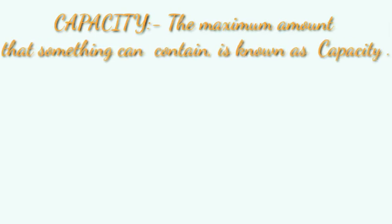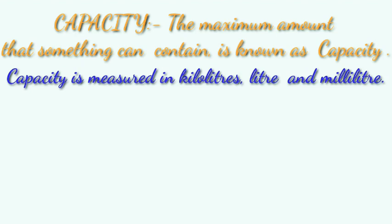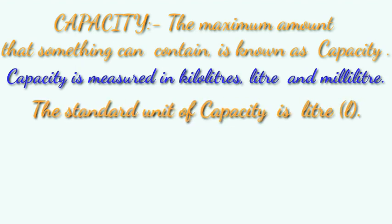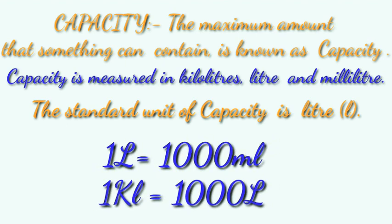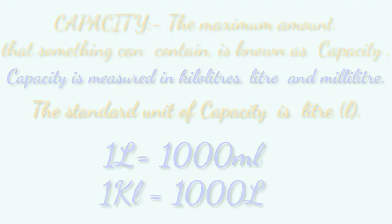Next is capacity. The maximum amount that something can hold or contain is known as the capacity of a container. Capacity is measured in kiloliters, liters, and milliliters. The standard unit of capacity is liter, represented by 'L'. 1 liter equals 1000 milliliters and 1 kiloliter equals 1000 liters. Same procedure: bigger to smaller unit — multiply; smaller to bigger unit — divide.